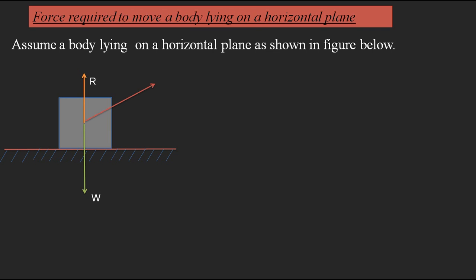Next, we represent the force P by which we can move the body. P is the minimum force applied to give motion to the body. When you try to pull the body in this direction, the friction force F acts opposite to the direction of motion, which is to the left-hand side. The applied force P makes an angle alpha with the horizontal plane, and we can resolve P into two components: horizontal and vertical.